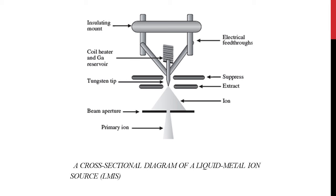We have two coils — a suppressor and extractor coil. When you heat up the gallium reservoir, all the gallium atoms flow through the tungsten tip and form a point source. The extractor coil helps pull the ions from the tungsten tip, and the suppressor coil suppresses the voltage to maintain an emission of 2.2 microampere. Once the ion beam is formed, it passes through a set of apertures which defines the beam diameter. Once the beam diameter is defined, the primary ions start scanning your sample and give you an image on the monitor.